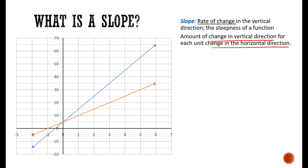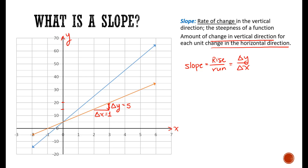Looking at this orange line, we're going to look at one unit change in the horizontal direction. If this axis is x, we'd call this a change in x of one unit, from 2 to 3. And the amount it changes in the vertical direction — let's call this axis y — is going from 15 to 20, that's a change of 5. The slope is the rise over the run: the change in the vertical direction over the change in x. In the case of this orange line, that's 5 over 1, which is 5.